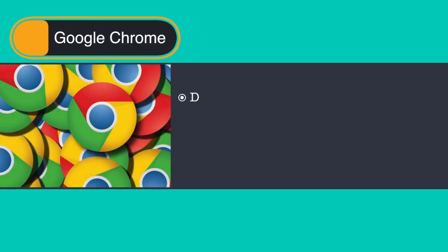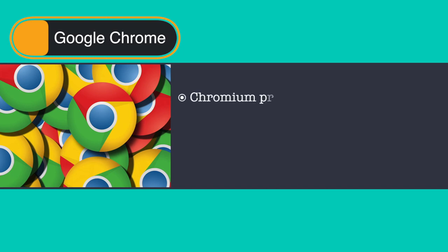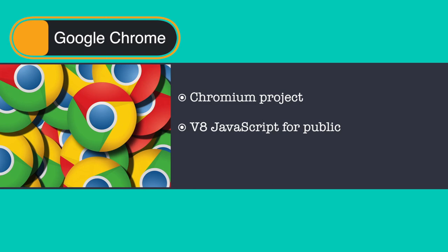Coming on to Google Chrome, it is a web browser developed by Google and uses the WebKit layout engine. There is also a project called Chromium, which is an open source project developed by Google, making part of Chrome's source code including its V8 JavaScript engine available to the public. Chromium implements the same feature set as Chrome but lacks built-in automatic updates and Google branding, and has a blue colored logo in place of the multi-colored Google logo.